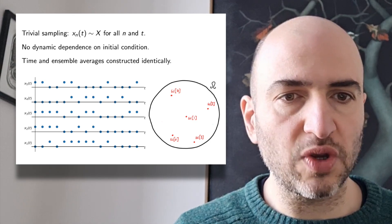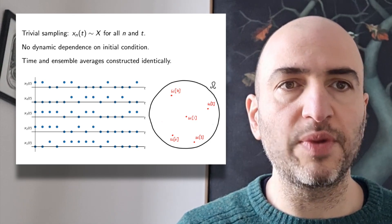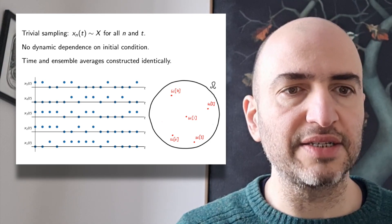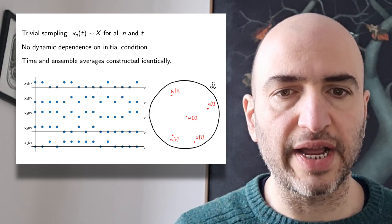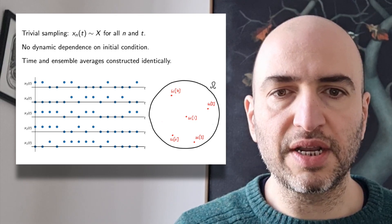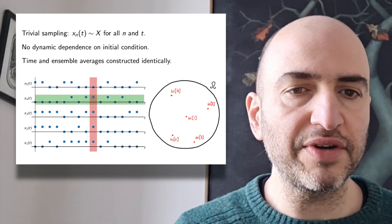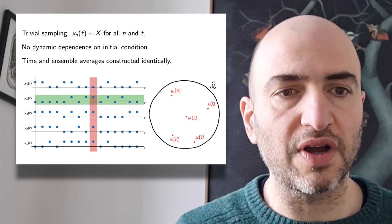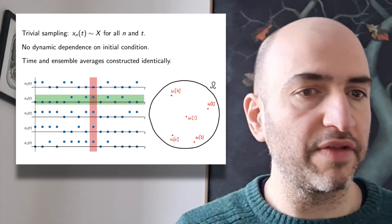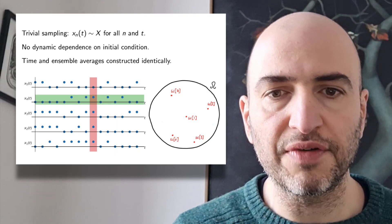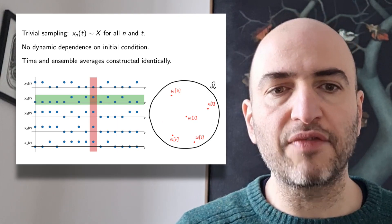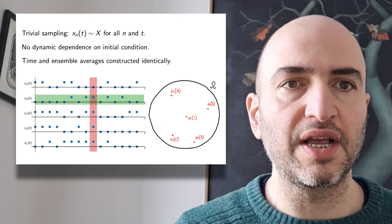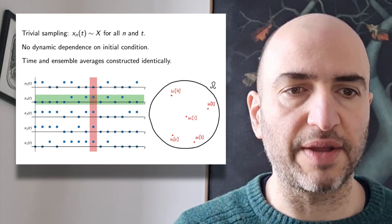In this example, we're tossing a coin and we get 1 for a head and 0 for a tail. Clearly, if we average over a single trajectory for a long time, we will eventually get the same number — a half — as if we average over many different systems at some fixed time.